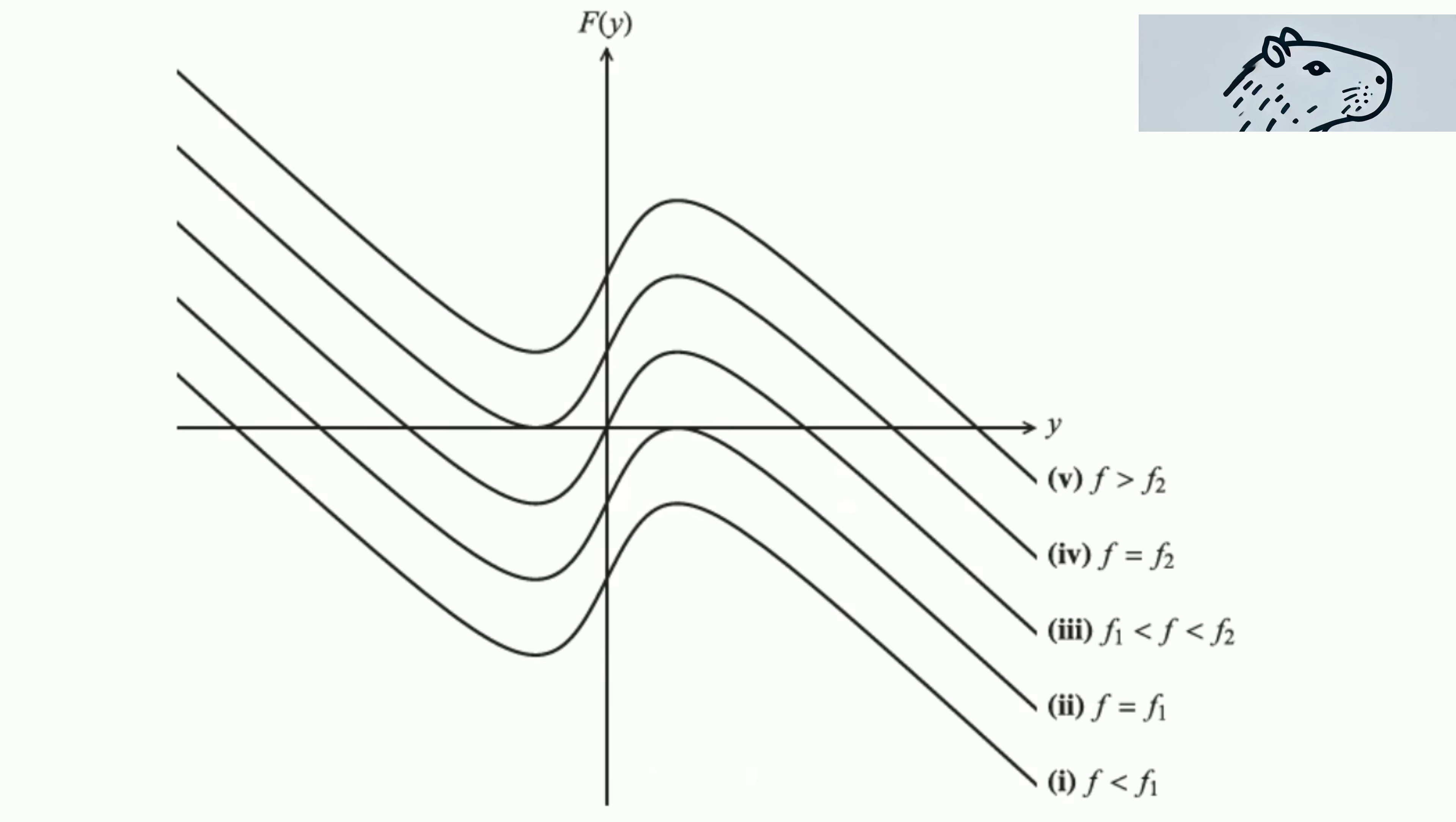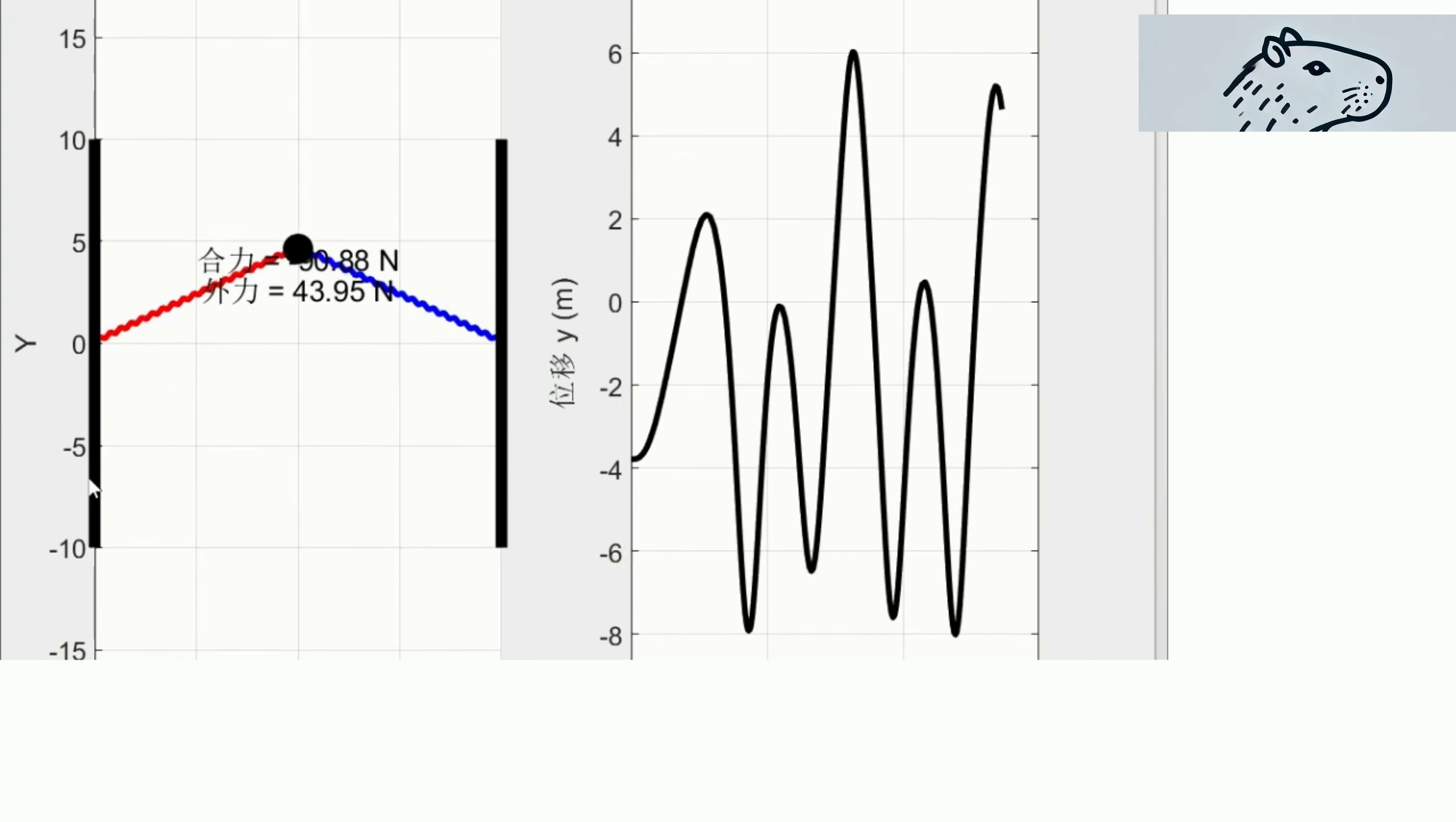We explore how different bifurcations, such as saddle node and pitchfork bifurcations, occur when varying the external force or spring separation parameters.